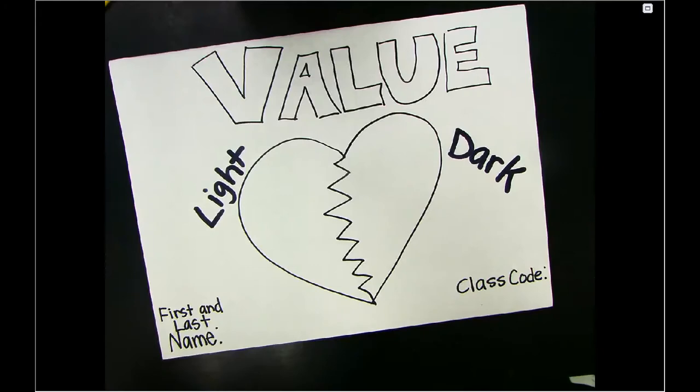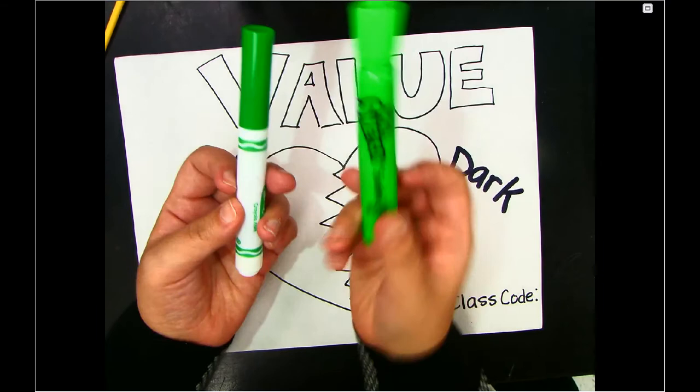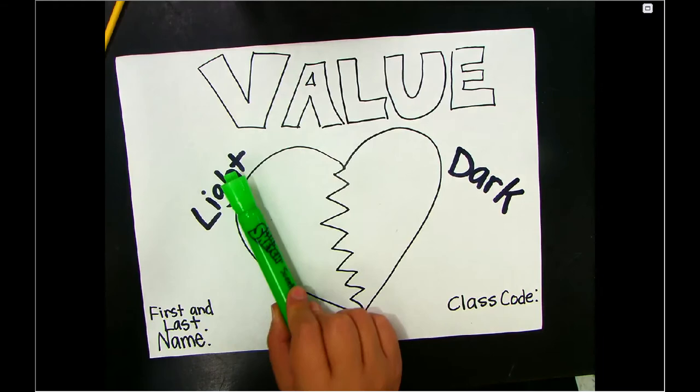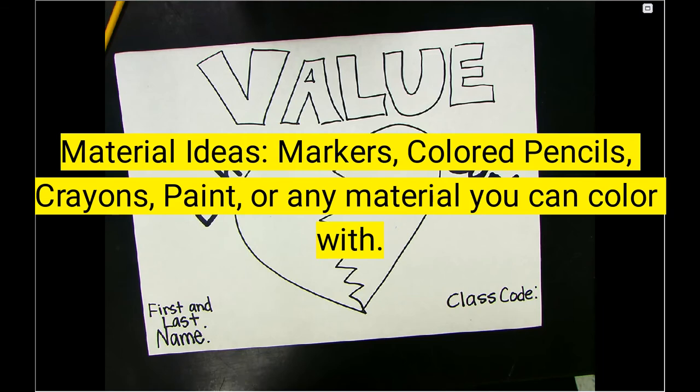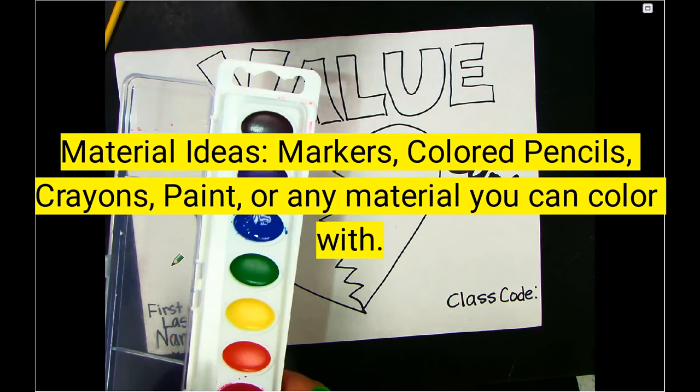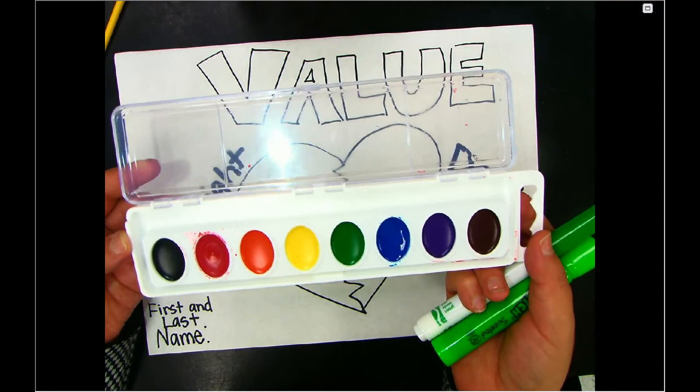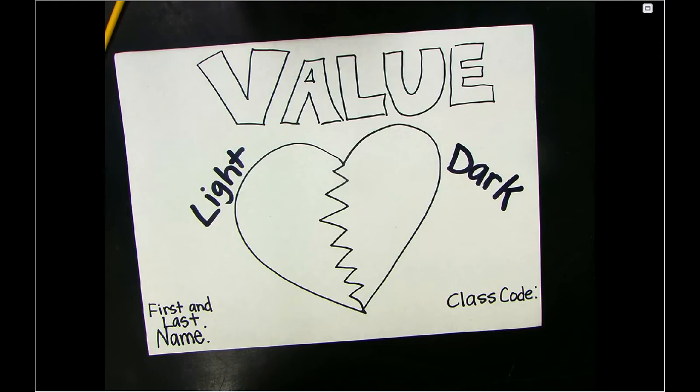Now when we start to talk about value, we're talking about the lightness or darkness of a color. So for instance if I have a dark marker and a light marker, I would color with my light marker on the light side and my darker green on the right side. If you don't have markers you can use crayons, colored pencils, or your watercolor paint from the art supply kit — or any other item you have at home.